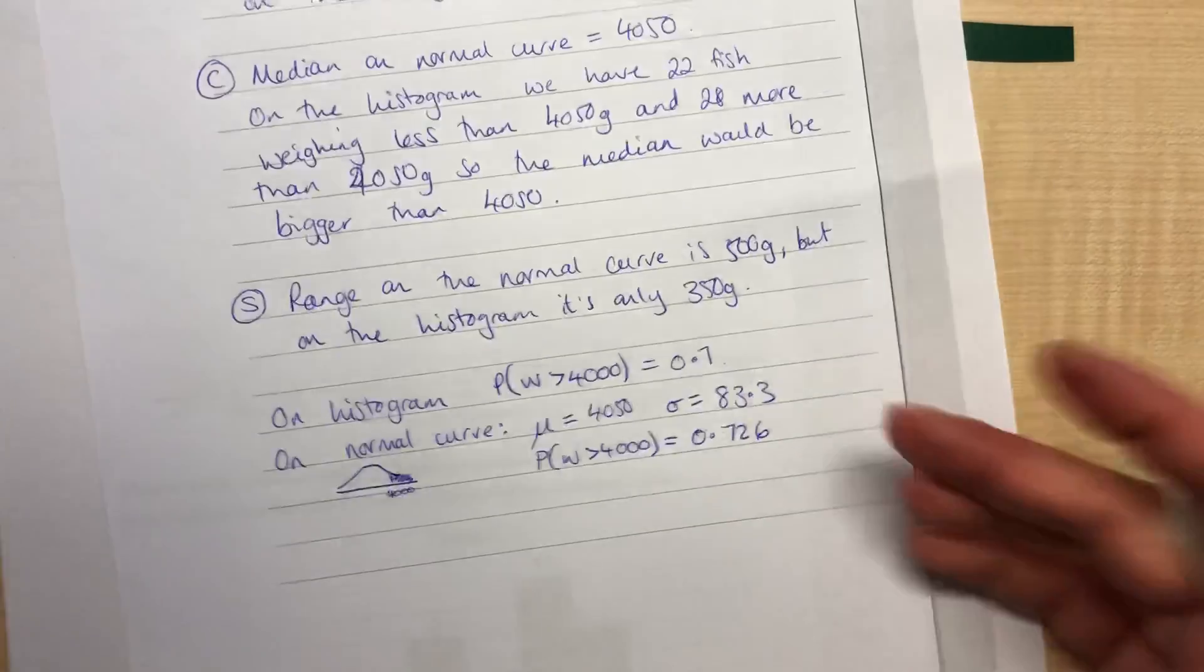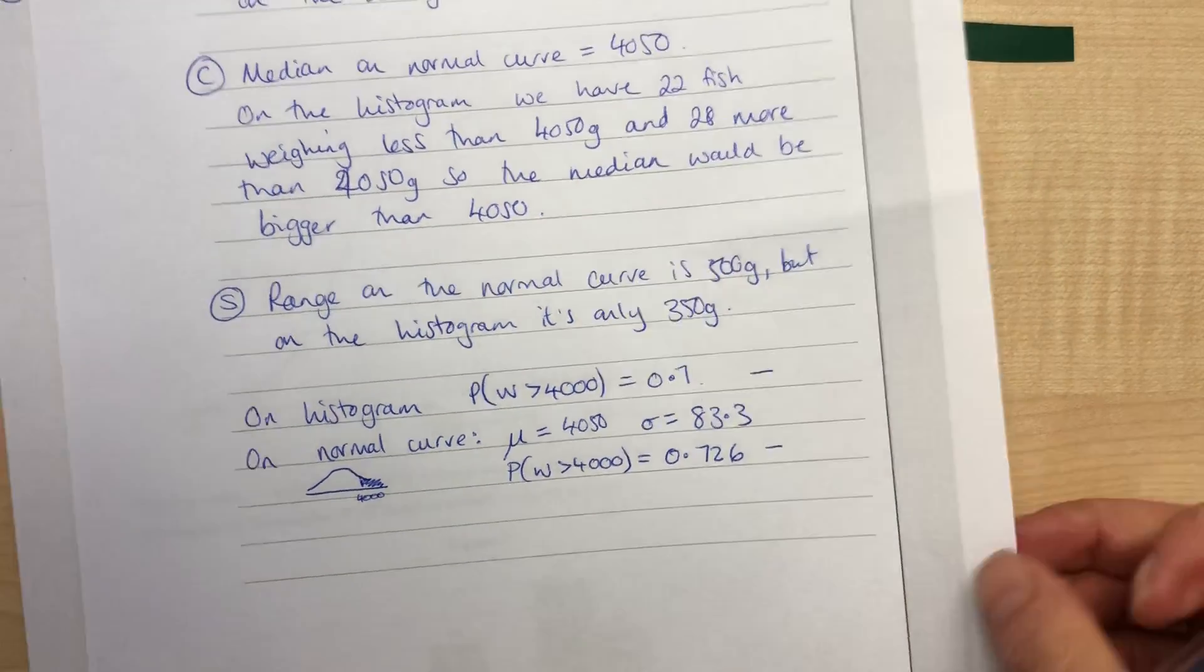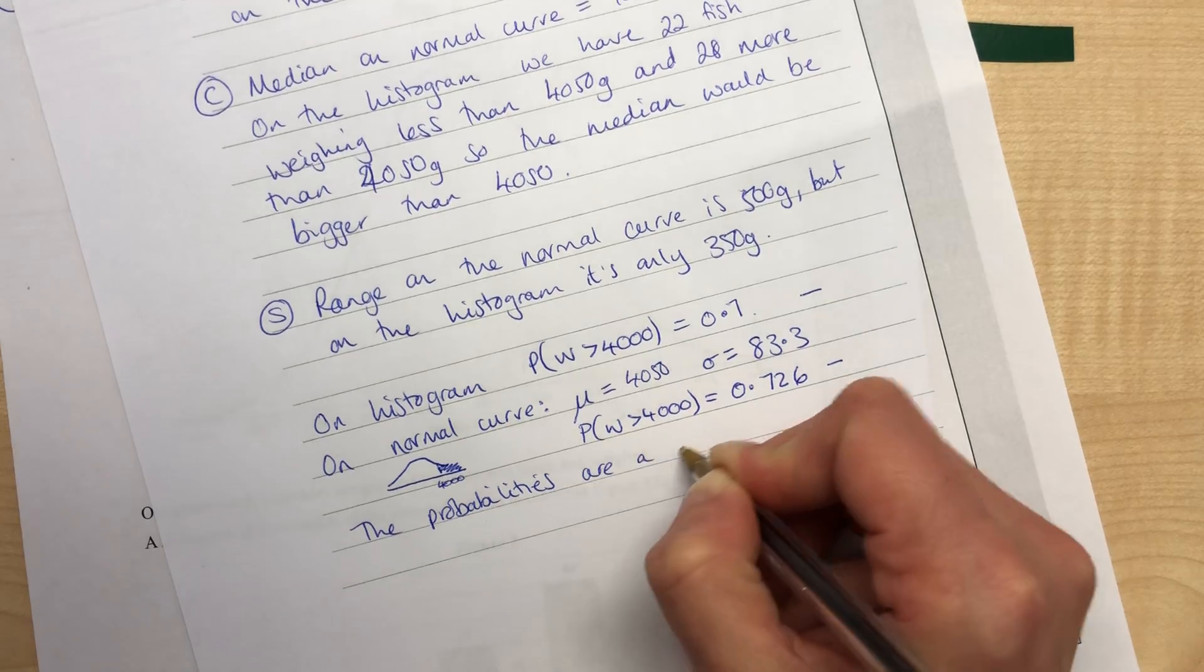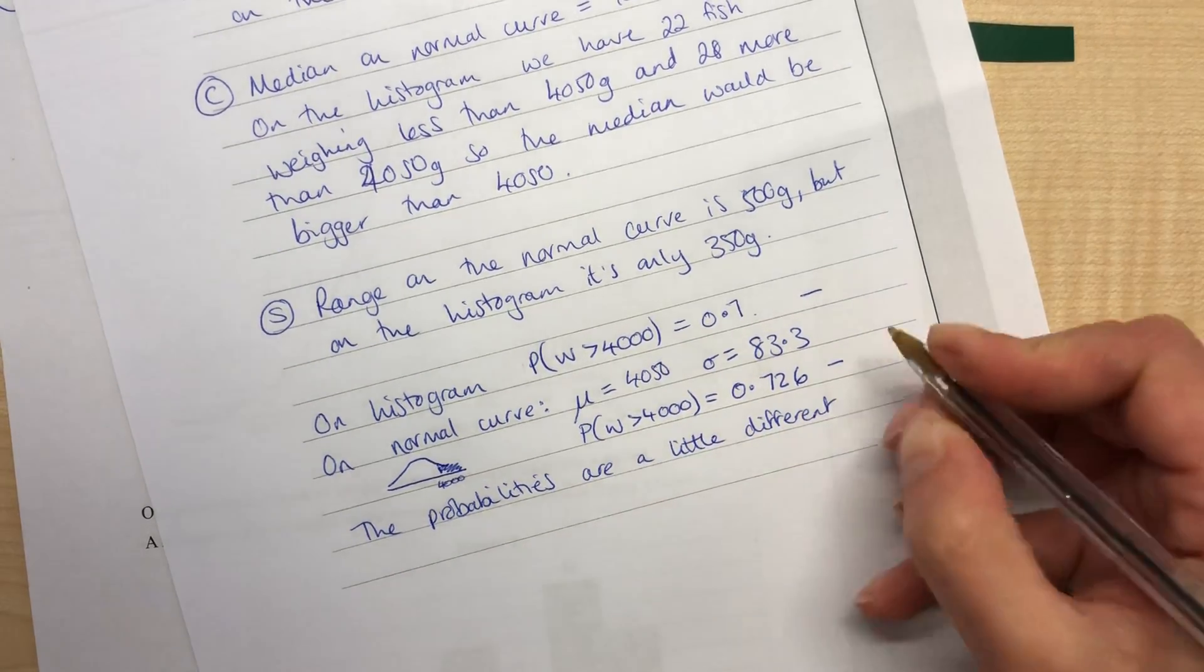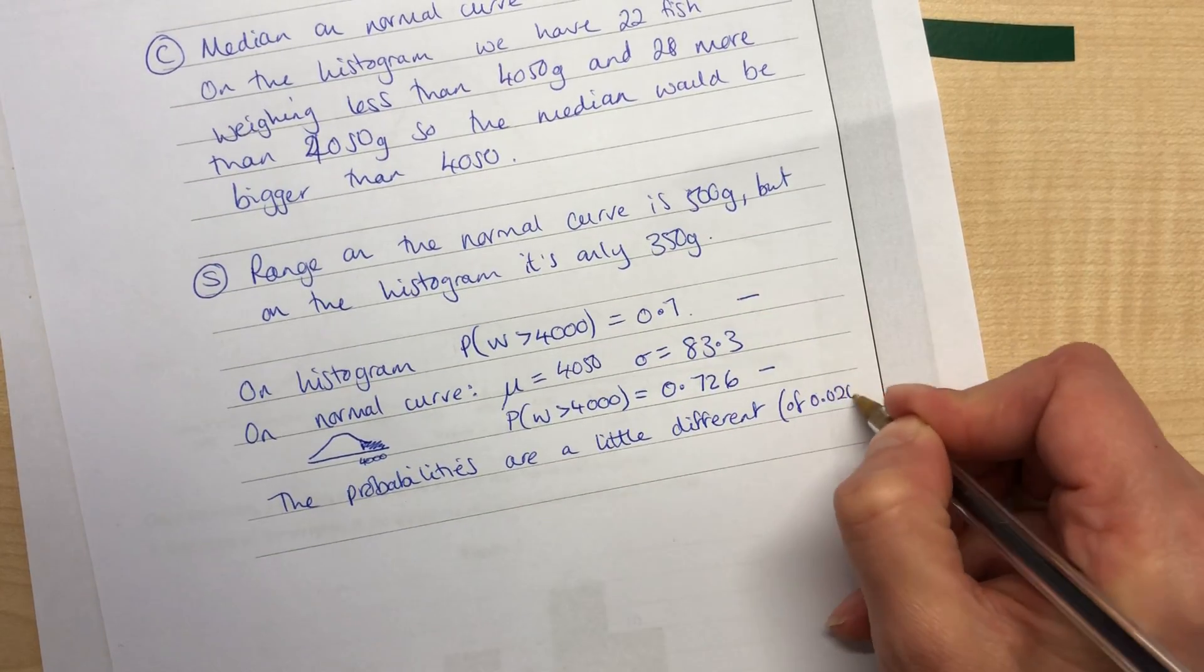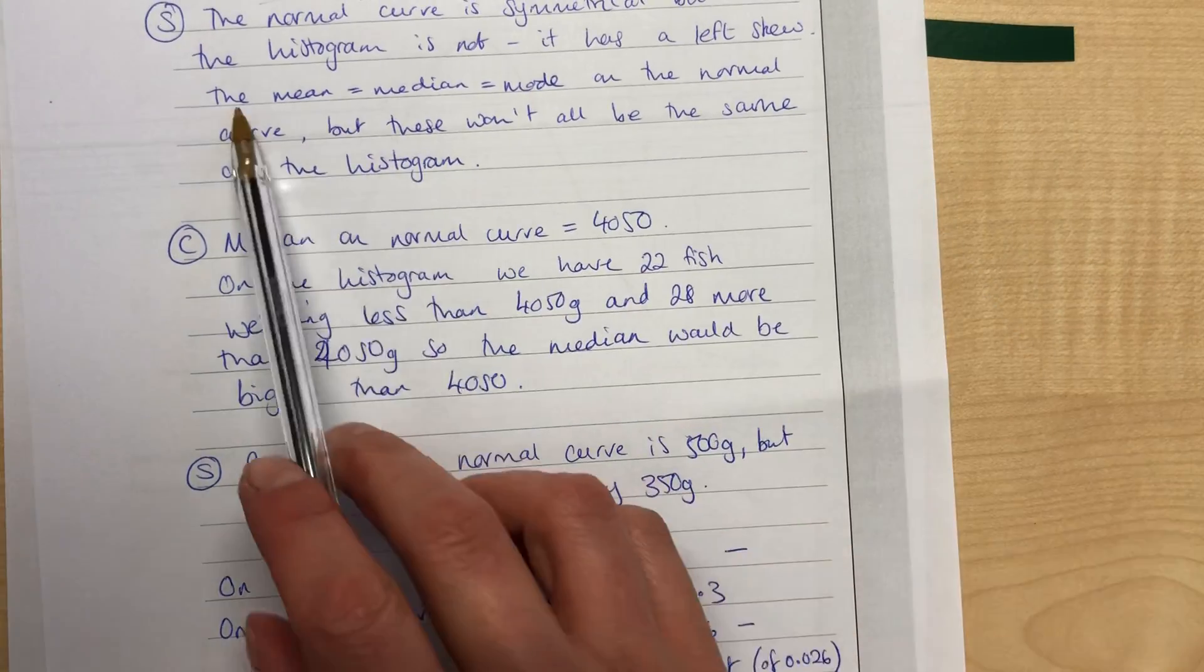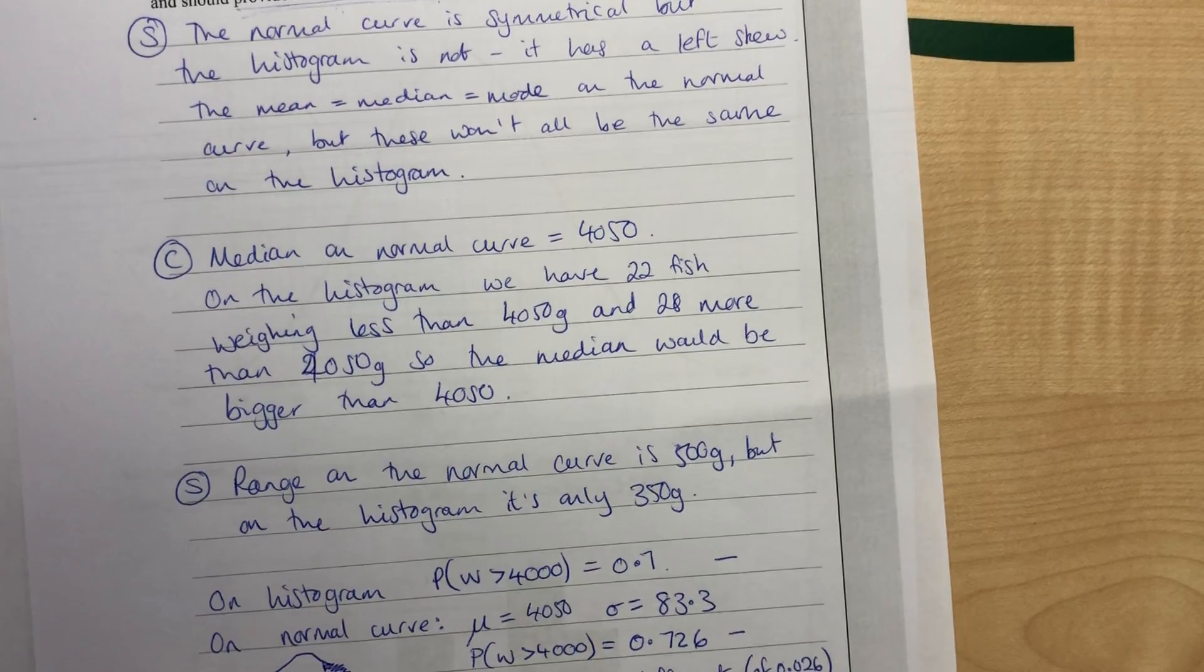So we can compare that these two probabilities here and here are a little bit different. So they have a difference of 0.026. And there we go. We've got four points that I've made there. We could actually even count this part here as another point. Let's just have a look at our mark scheme.